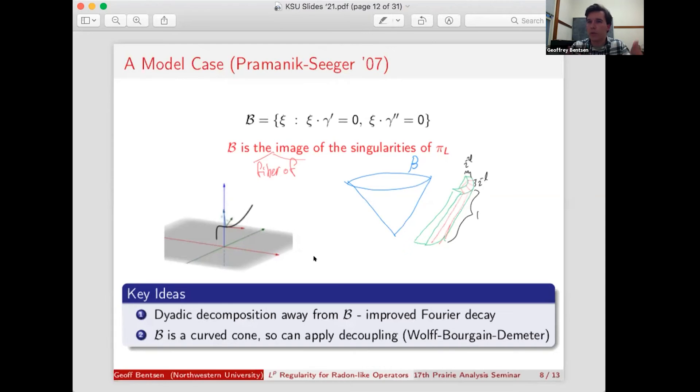And so the question is, how do we reinterpret this proof structure in terms of the canonical relation and all of this general stuff? And the key here is in red, that this set of bad directions, in the case of this operator T, is the fibers of the image of the singularities of the maps pi L and pi R. And there's a couple of additional things that need to be true in order to apply this same proof structure.